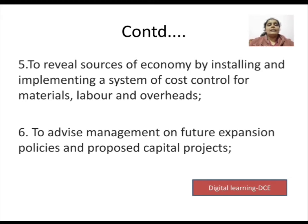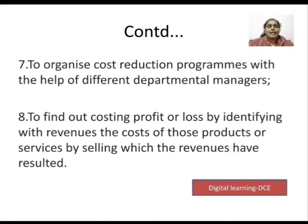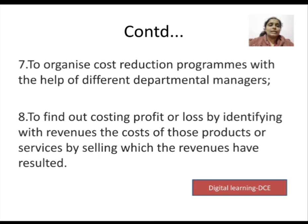By studying costs in detail, we can advise management on future expansion policies and proposed capital projects — identifying which project is best and which is worst. The next objective is: to organize cost reduction programs with the help of different departmental managers. Every department — production, labor, and overhead — has its own costs. By coordinating across all departments, we can work together to reduce overall costs.